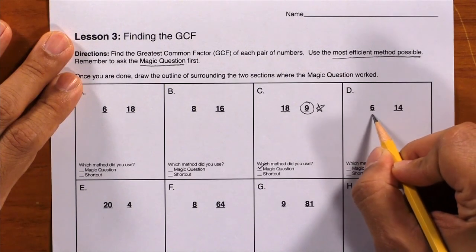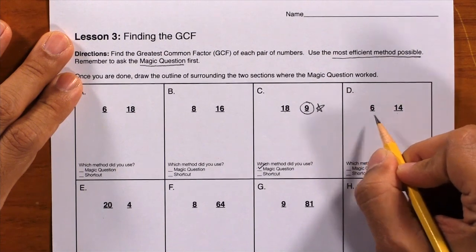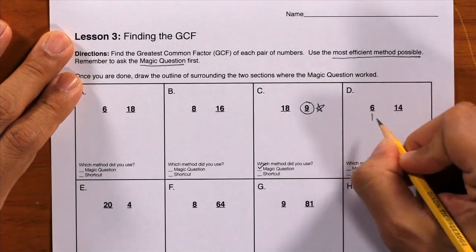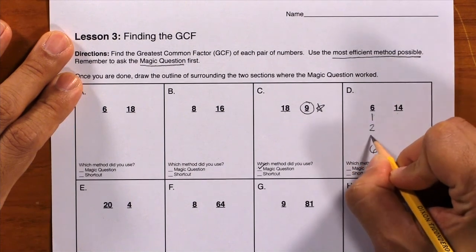Don't factor both the 6 and the 14, just factor the smaller number. Here, we have 1 and 6, and 2 and 3.